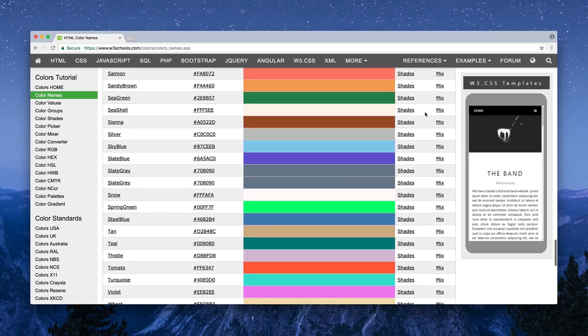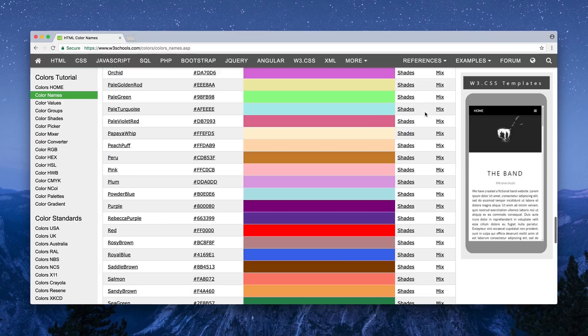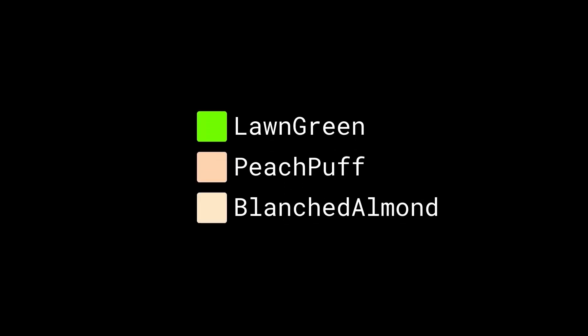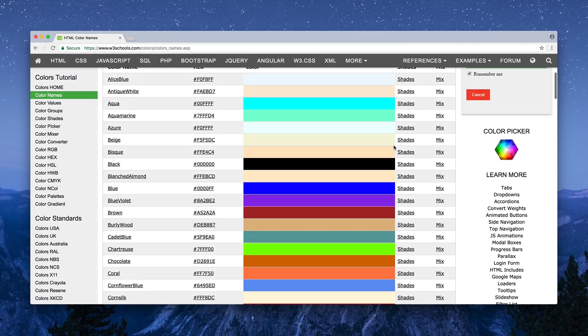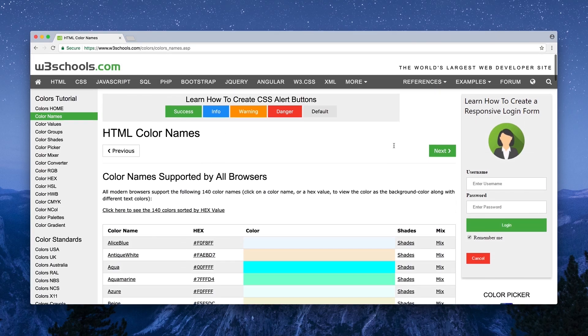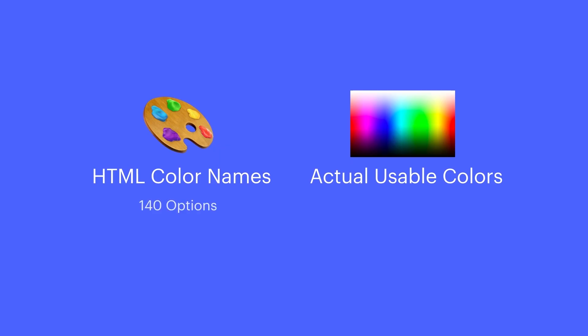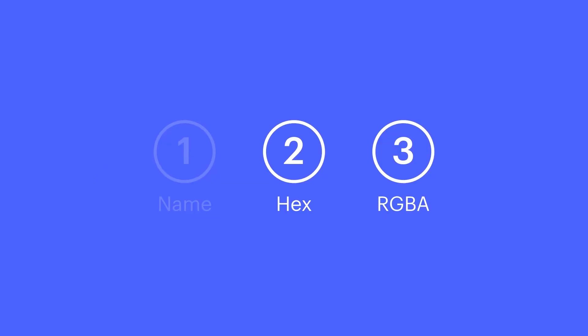But the names and the colors are somewhat arbitrary, like Lawn Green, Peach Puff, Blanched Almond, and of course Lemon Chiffon. Because HTML color names aren't a full representation of what's entirely possible with web colors, sometimes it can be a bit more freeing to use one of the other formats.